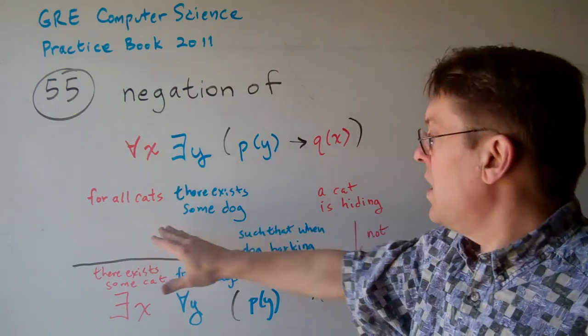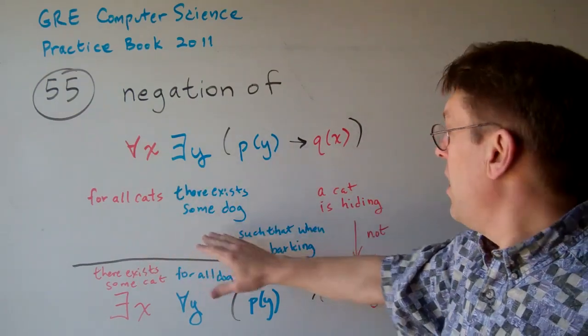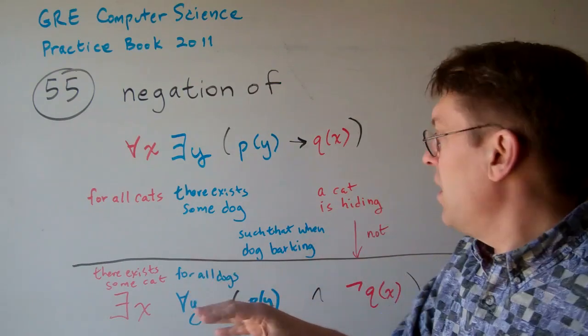So what this is saying is for all cats, there exists some dog such that when a dog is barking, a cat is hiding.